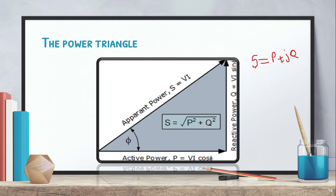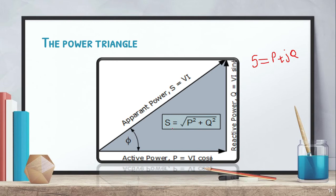Let me show you the complex power represented in the Z plane. Here you can see active power P on the real axis and reactive power Q on the imaginary axis. By adding P and Q as vectors, we obtain S. So active power P equals VI cos phi, reactive power Q equals VI sin phi, and S is the vector addition of P and Q, equal to V multiplied by I.